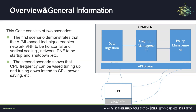This case covers two scenarios. The first scenario demonstrates that AI-based techniques enable the network NFA to perform horizontal and vertical scaling, and network VNF to scale up and scale down. The second scenario shows that CPU frequency can be tuned up and tuned down according to CPU power consumption.